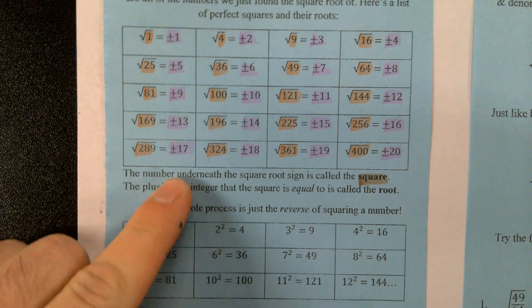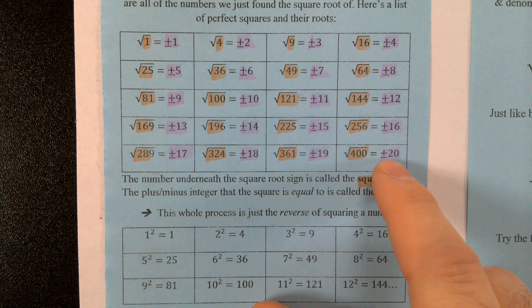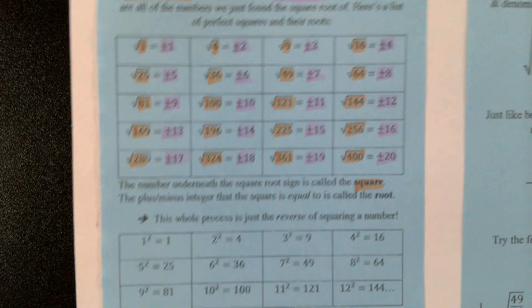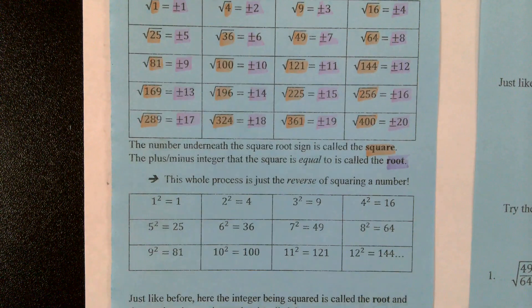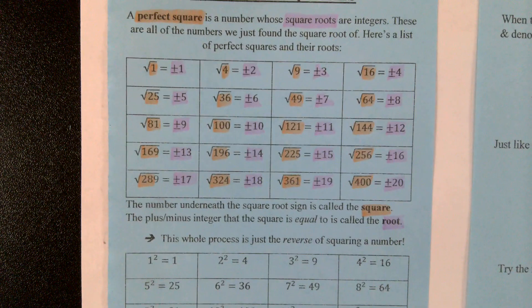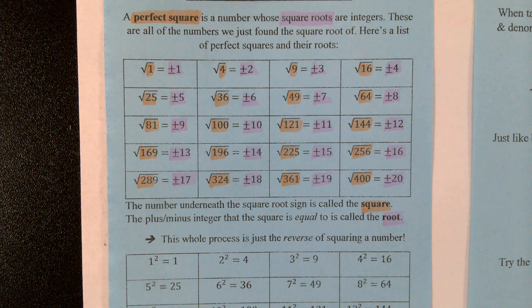The number underneath the square root sign is called the square. In this case, these are all perfect squares because they give us a nice, even answer. We'll talk about some not-so-even answers tomorrow, but today we're focusing on perfect squares. The plus or minus integer that the square is equal to — 'integer' just meaning a number — that's the root. So following along with those color schemes: we've got squares and we've got roots. The symbol itself is called a square root, and that's why it gets a little confusing.